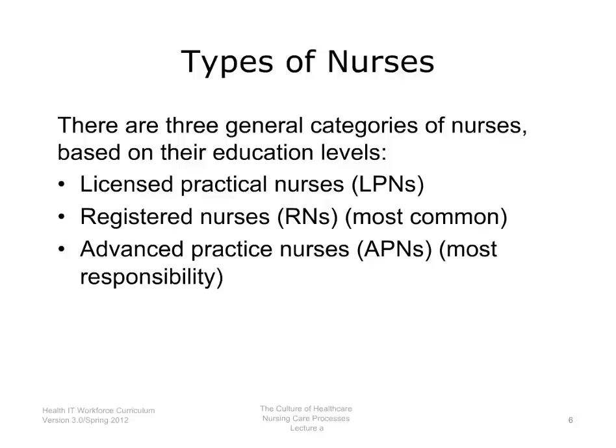In general, most nurses fall into three different categories: Licensed Practical Nurses, Registered Nurses, and Advanced Practice Nurses. Of the three categories, Licensed Practical Nurses, or LPNs, have the least amount of education. Advanced Practice Nurses, or APNs, have the greatest amount of education. Nurses with the most education and expertise have the most responsibility. For example, Advanced Practice Nurses can prescribe medications, while Licensed Practical Nurses and Registered Nurses cannot.